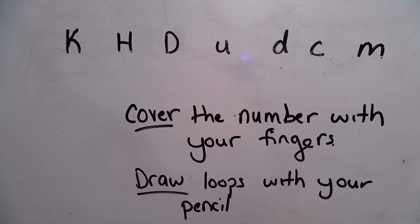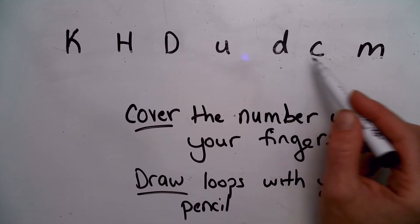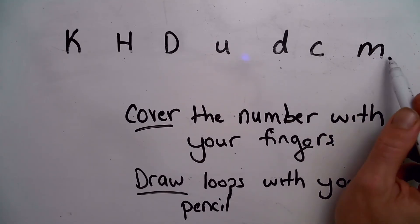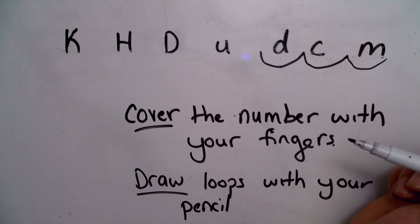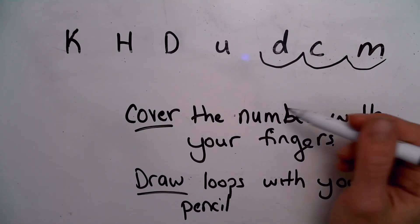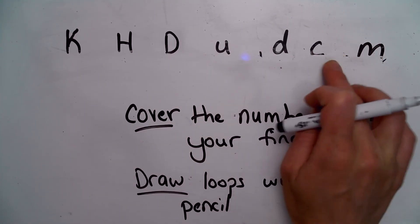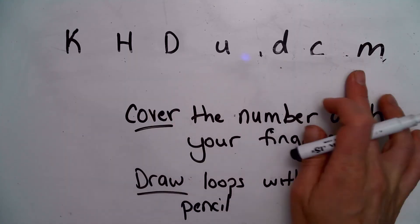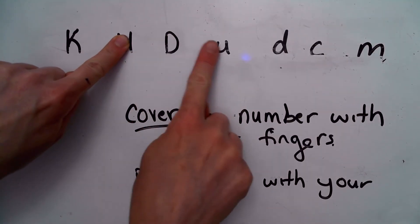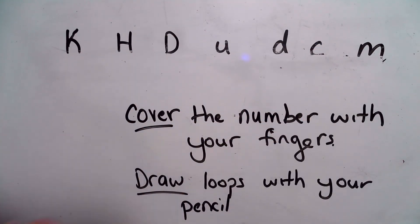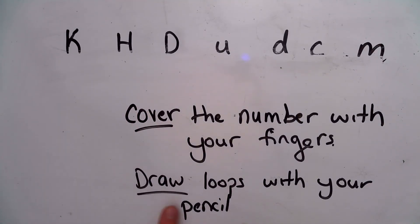The third common mistake that I see is that students will use their pencil up here and they'll start drawing loops. They'll do something like this. And that's going to cause them to be off by one digit when they are converting. So it's very important that on your line like this, that you use your fingers and you completely cover the letters and you only draw loops when you're using your pencil.